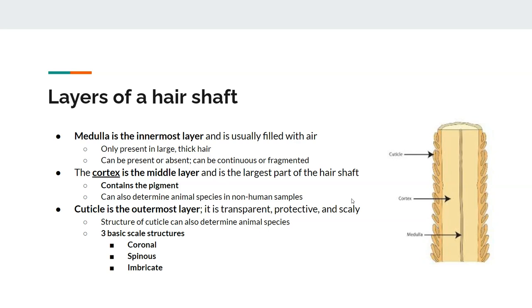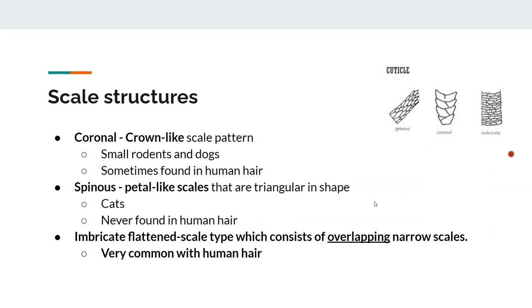The three basic scale patterns are coronal, spinous, and imbricate. Coronal means crown-like, shaped like cups stacked on each other — seen very often in small rodents and dogs and very rarely in human hair. Spinous looks like triangular overlapping petals — never seen in humans but very common in cats. Imbricate is a bunch of overlapping scales in a mesh pattern — seen very often in human hair and not very often elsewhere.